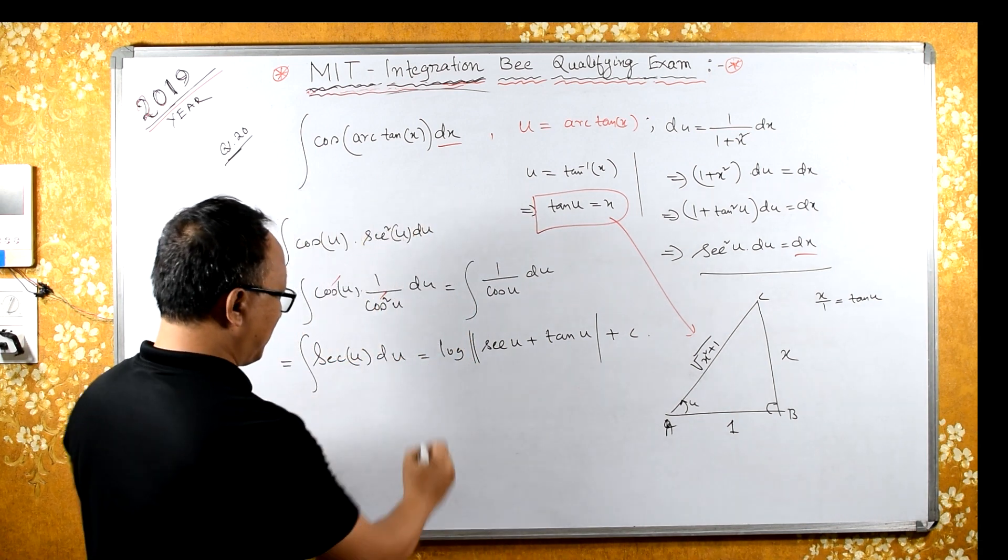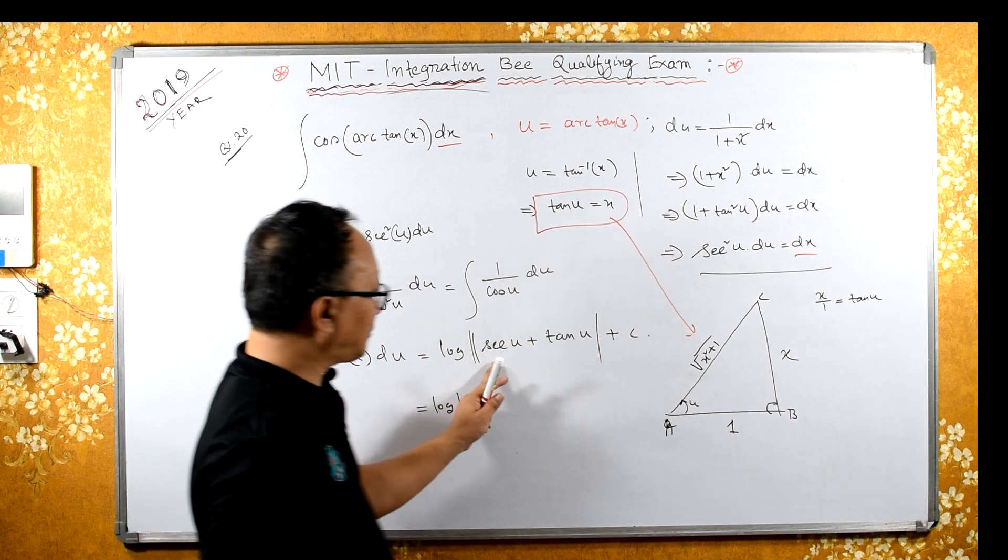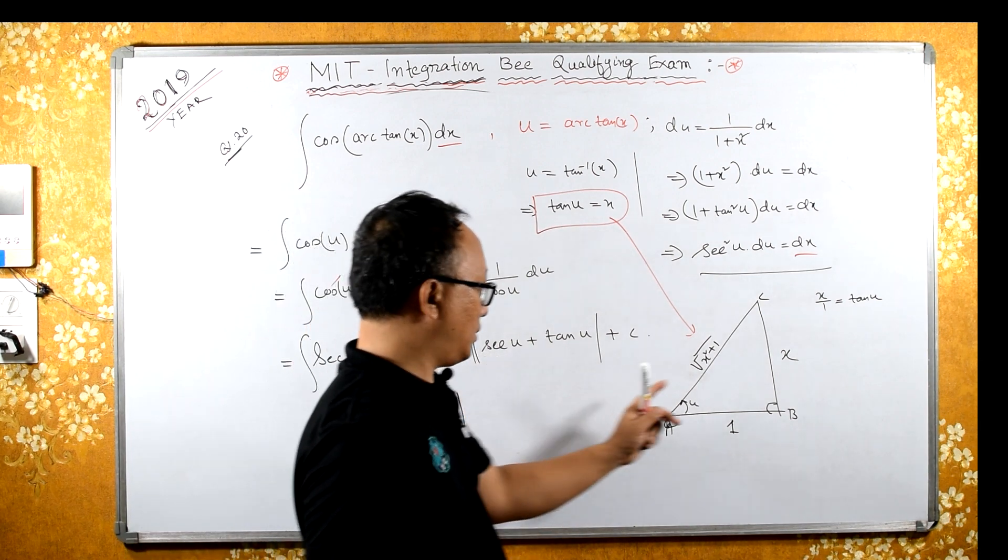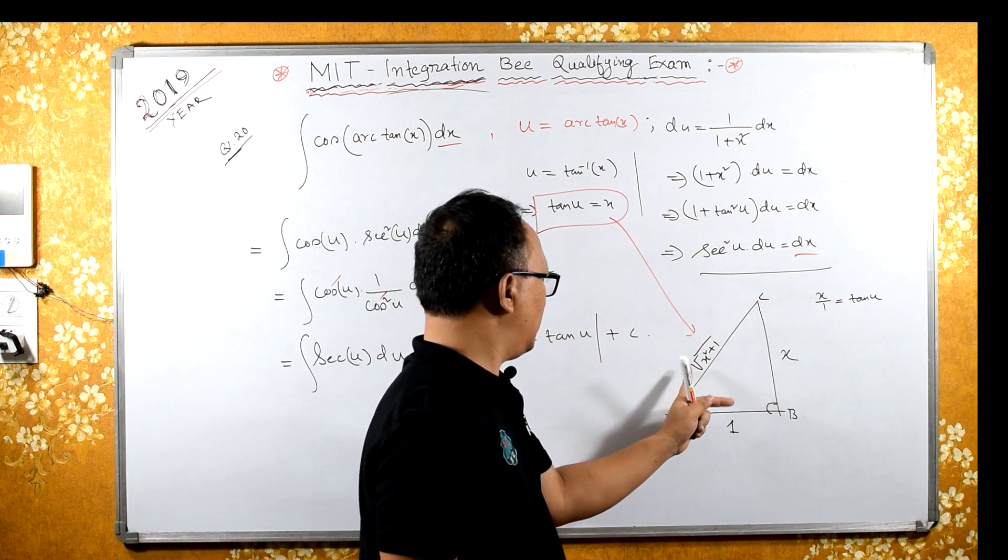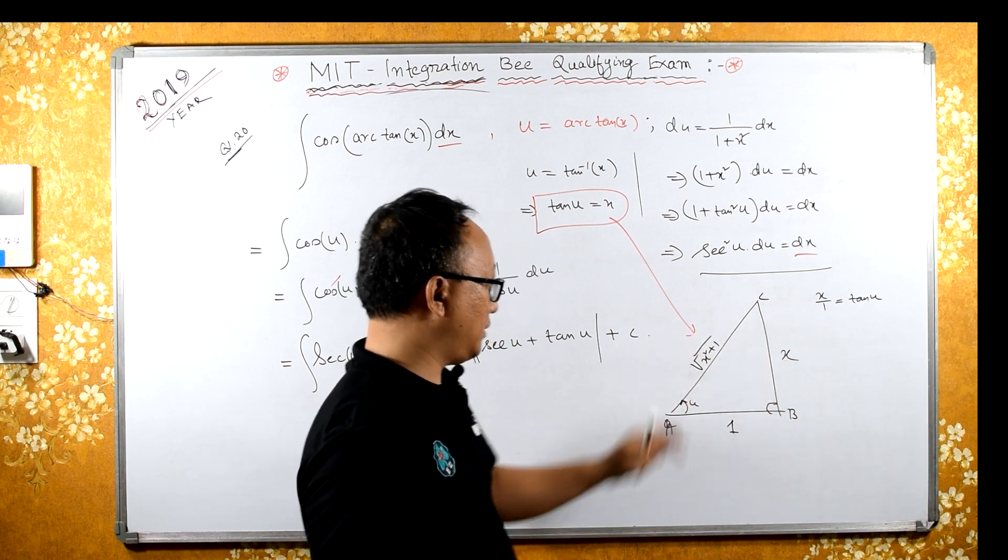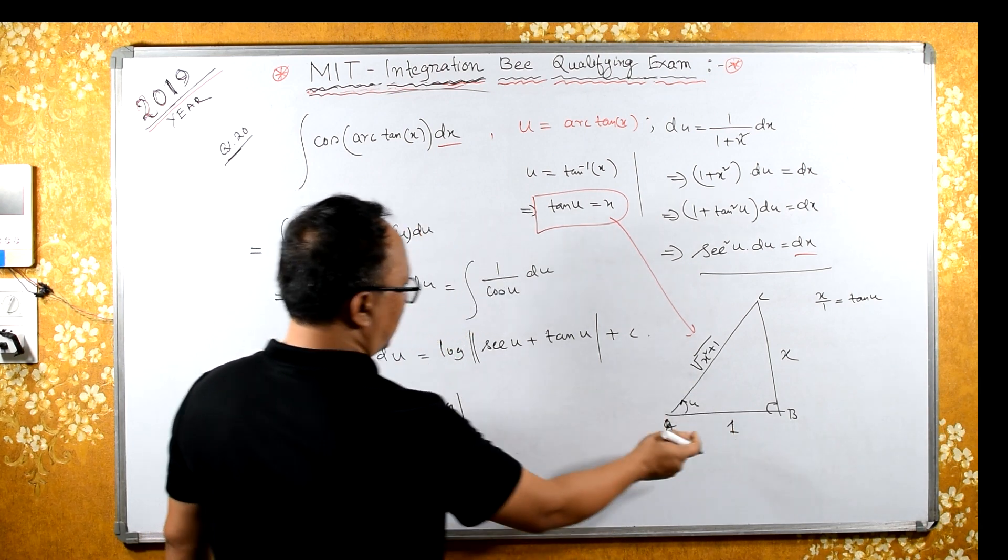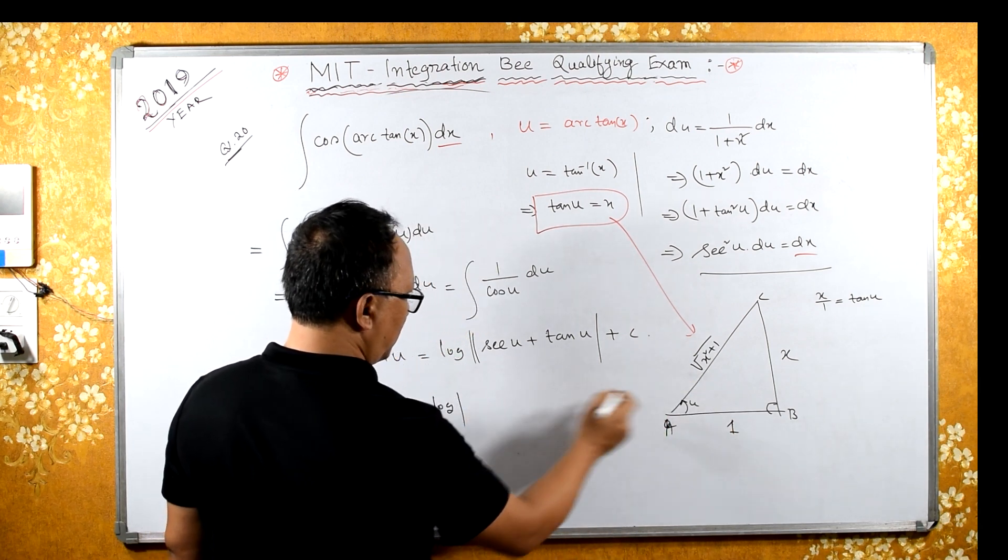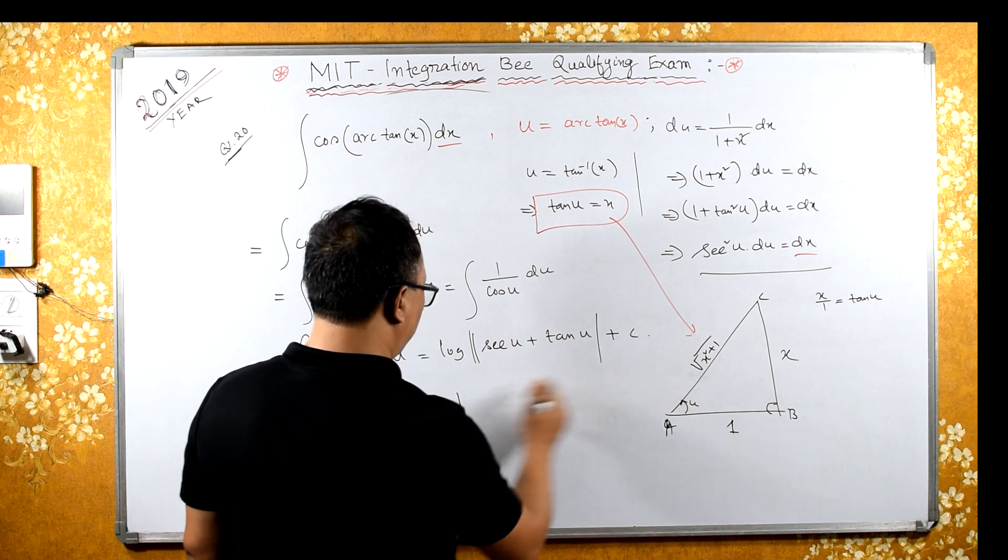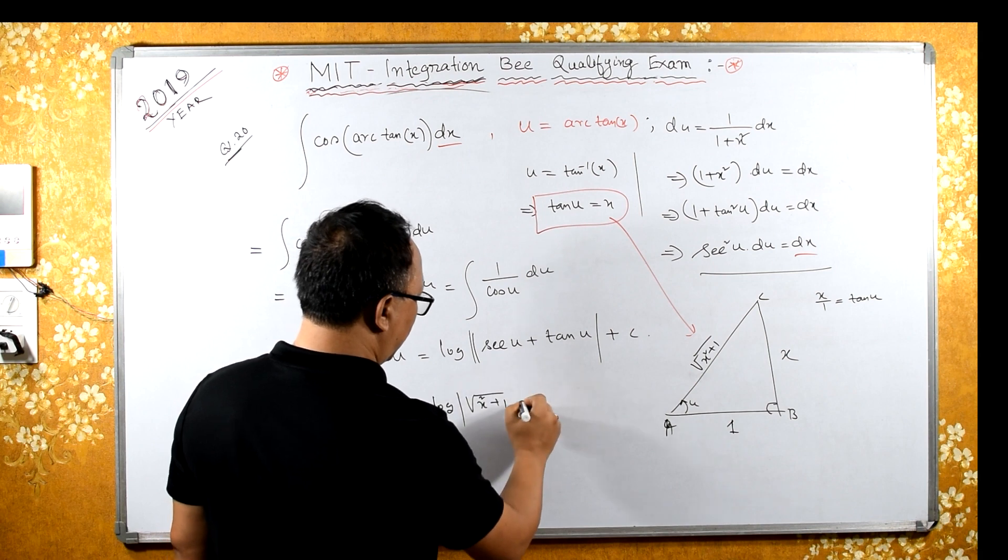From there we can find sec. Sec is reciprocal of cos. Cos is adjacent over hypotenuse. So sec will be 1 over this. Instead of this we have square root of x squared plus 1.